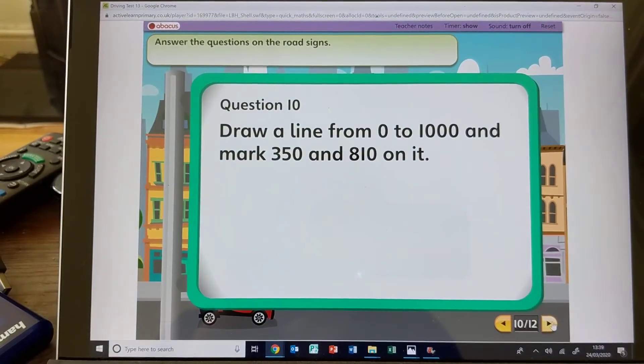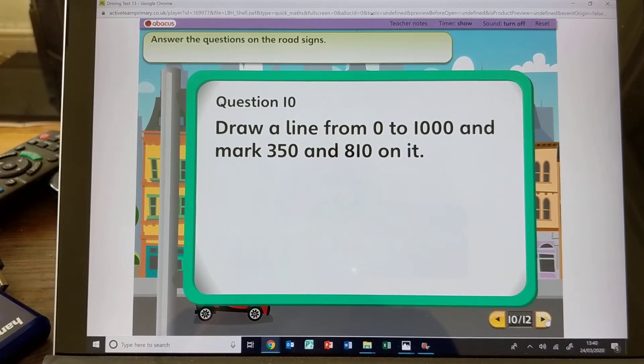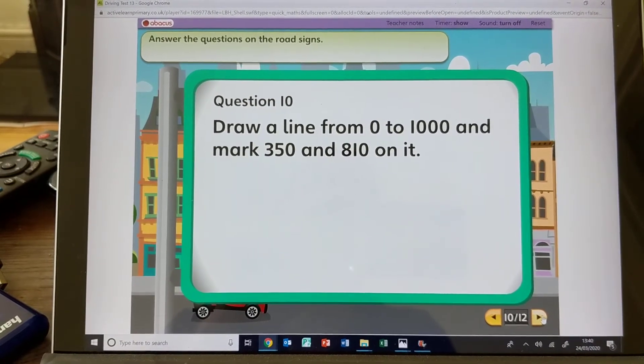Question 10: Draw a line from 0 to 1000 and mark 350 and 810 on it.